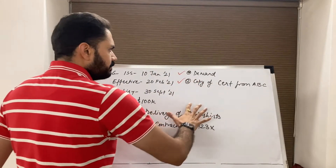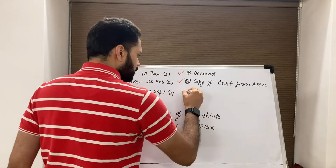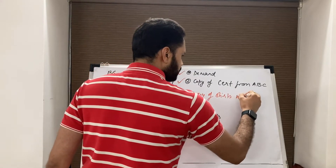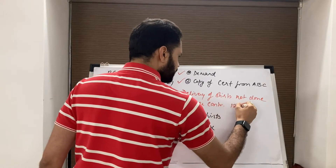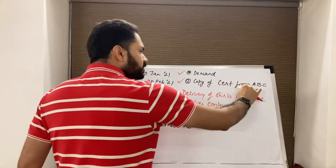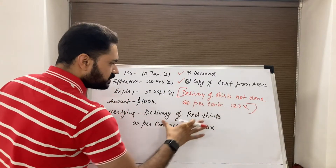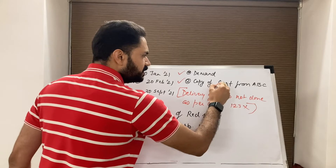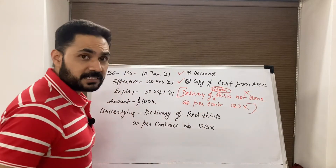For example, if the certificate presented mentions 'delivery of shirts was not done as per contract number 123X' — even though the guarantee says 'delivery of red shirts as per contract number 123X' — this is acceptable because it is not contradicting. However, if the certificate had mentioned 'green shirts,' there would be a contradiction and that demand cannot be accepted.